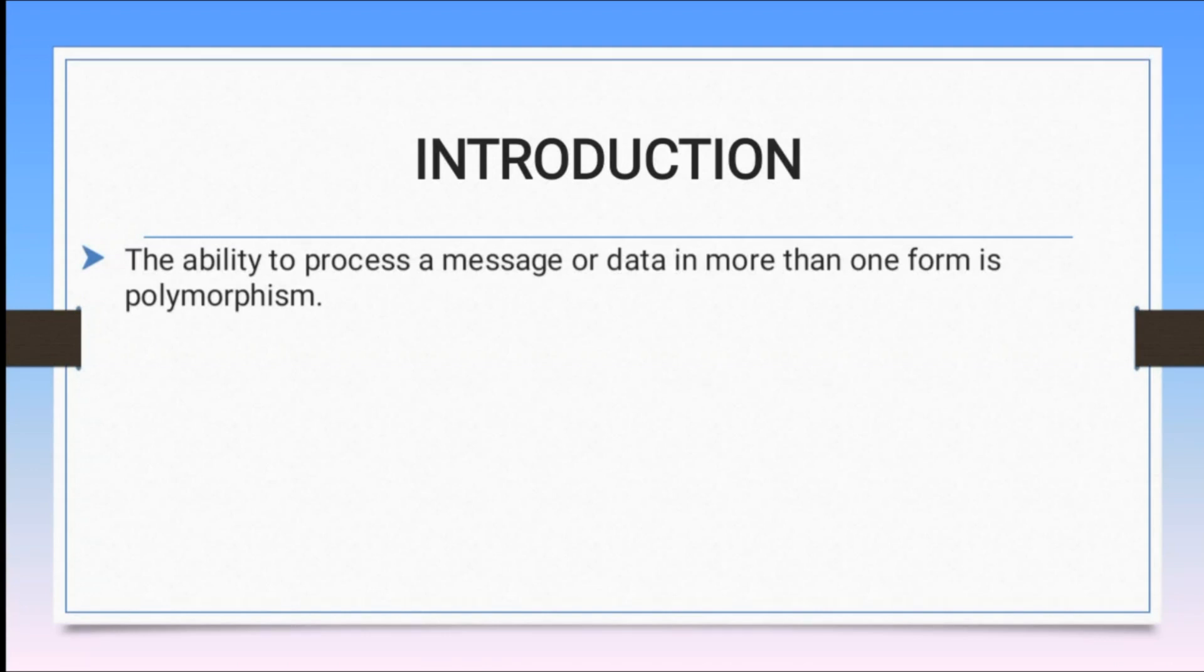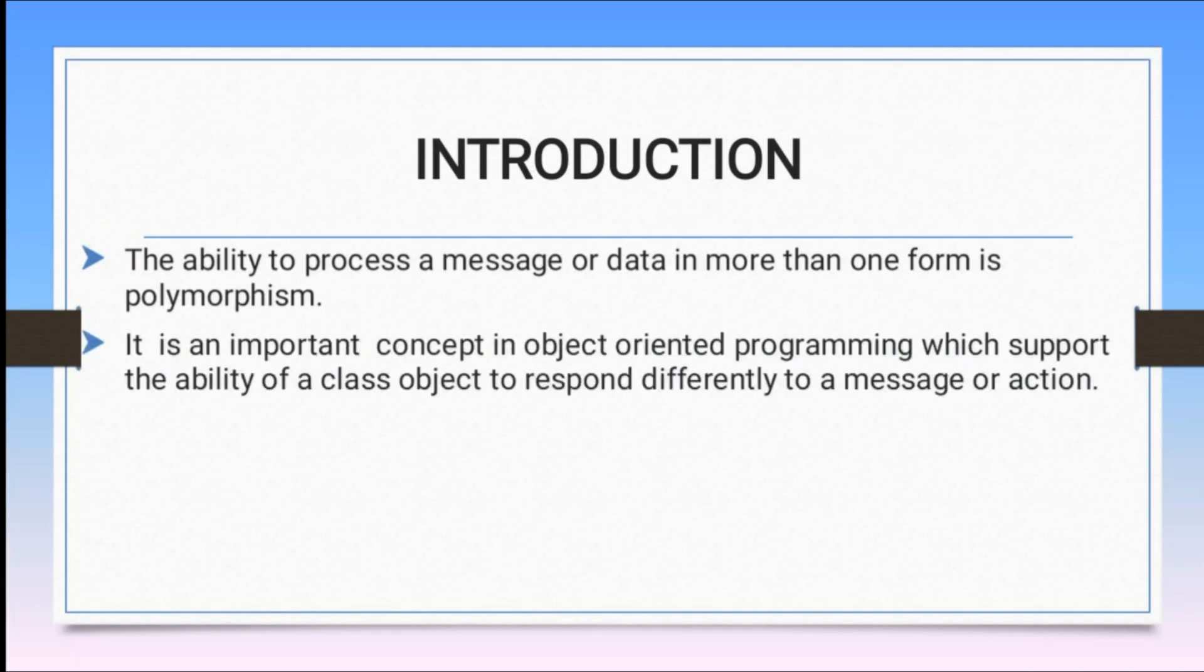A specific method or data we need to access in multiple forms. It is an important concept in object-oriented programming which supports the ability of a class object to respond differently to a message or action.